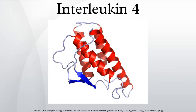Interleukin-4 is a cytokine that induces differentiation of naive helper T-cells to Th2 cells. Upon activation by IL-4, Th2 cells subsequently produce additional IL-4 in a positive feedback loop. The cell that initially produces IL-4, thus inducing Th0 differentiation, has not been identified.